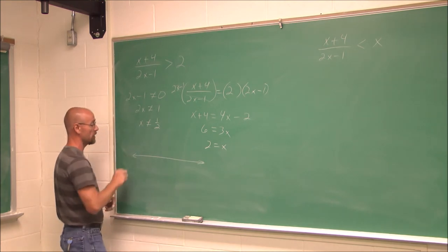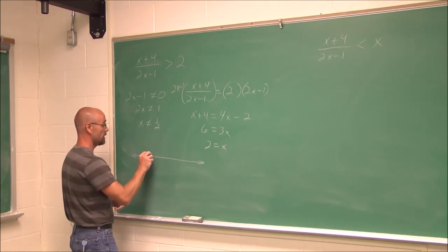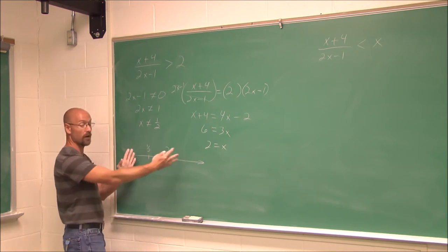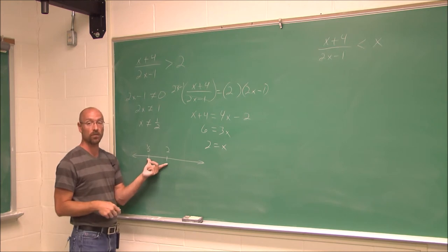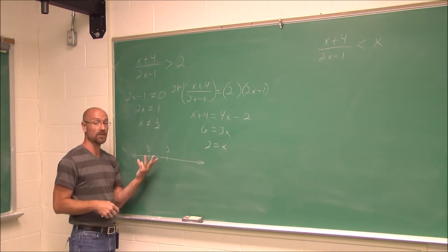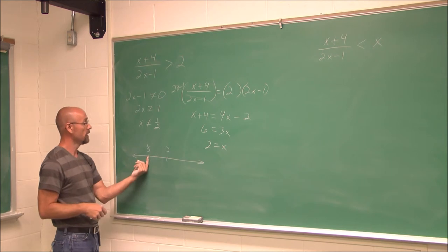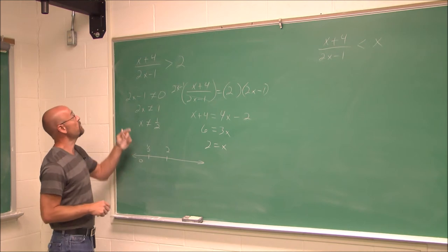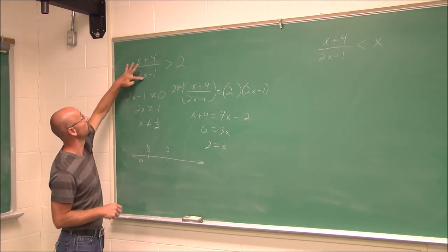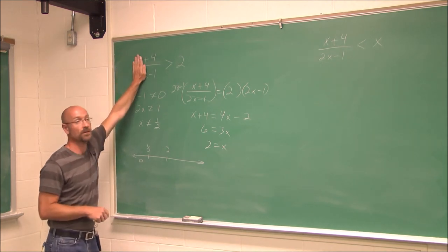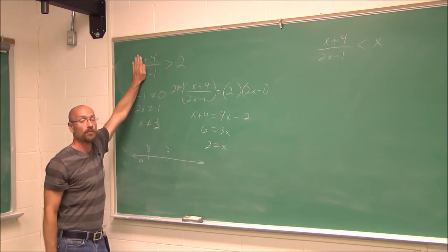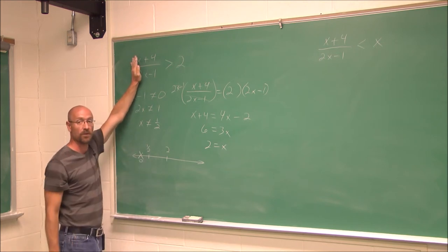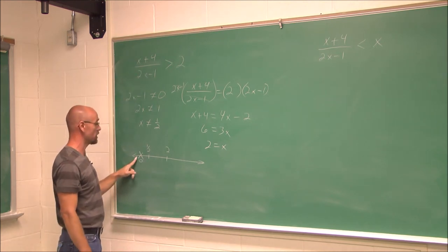Again, we just put them on a number line. 1/2 is here, and 2 would be further to the right. From this point, we just test intervals. I'll pick a value less than 1/2 — I'll choose 0. If I put 0 in here, those x terms are 0. I get 4 divided by negative 1, which is negative 4. Is negative 4 greater than 2? No — negative 4 is less than 2. That's false.